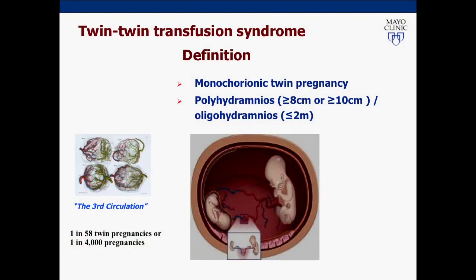Monochorionic di-amniotic twin pregnancies — when we have one placenta and two amniotic sacs — account for 20% of spontaneous twin pregnancies and almost 5% of medically assisted twin pregnancies. 20% of monochorionic di-amniotic twin pregnancies are complicated by twin-to-twin transfusion syndrome.